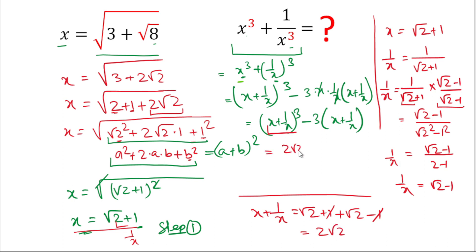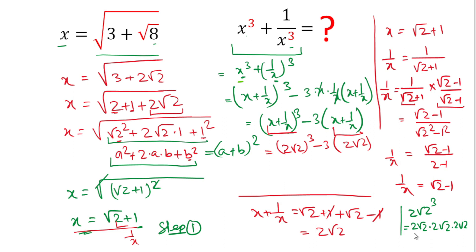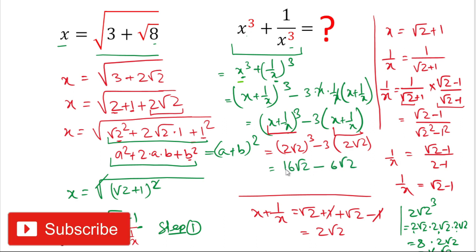So we write 2 square root 2 whole cubed minus 3 times 2 square root 2. For 2 square root 2 cubed: 2 times 2 times 2 equals 8, and square root 2 times square root 2 times square root 2 equals 2 square root 2, so 8 times 2 square root 2 equals 16 square root 2. Therefore the expression becomes 16 square root 2 minus 3 times 2 square root 2, which is 16 square root 2 minus 6 square root 2 equals 10 square root 2. So the value of x cubed plus 1 over x cubed is 10 square root 2. This is our answer.